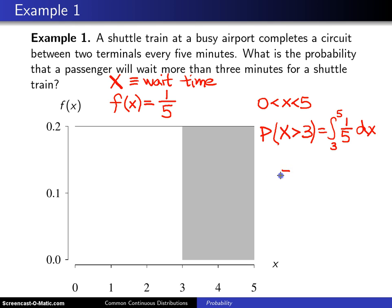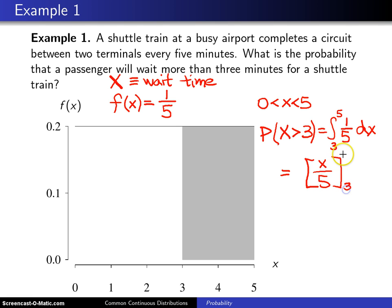That probability turns out to be, if you integrate, x divided by five, evaluated from three to five. And that is five-fifths minus three-fifths, or two-fifths.